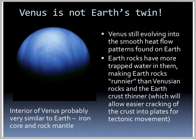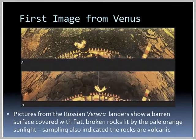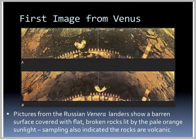Venus is not Earth's twin. The interior of Venus is probably very similar to Earth — iron core and rock mantle — but Venus is still evolving toward the smooth heat flow patterns found on Earth. Earth rocks have more trapped water, making them runnier than Venusian rocks, and the Earth's crust is thinner, which allows easier cracking into plates for tectonic movement. The first images from Venus's surface were from the Russian spacecraft Venera, which landed showing a barren surface with flat broken rocks lit by pale orange sunlight. Sampling indicated the rocks were volcanic.